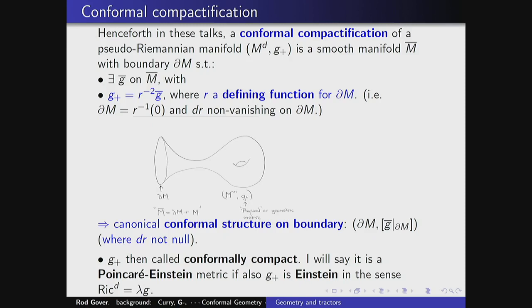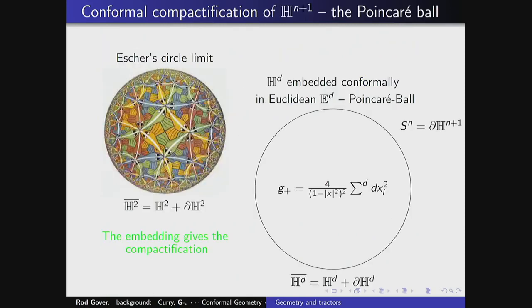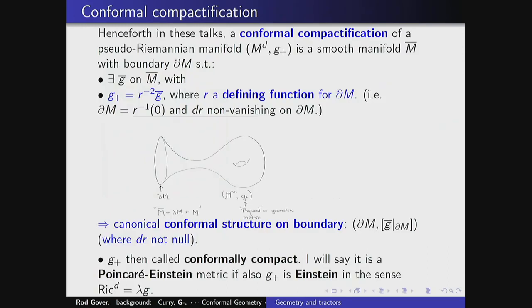G̅ is a metric that goes to the boundary, and the conformal factor is such that G₊ = ρ⁻² G̅, where ρ is a defining function for the boundary. That means the boundary is exactly the zero set of ρ, and the differential of ρ is nowhere vanishing on the boundary. We saw one in action — in the hyperbolic example, ρ would be (1 − x²)/2. If you're doing physics, G₊ is your space-time metric; in mathematics it's your geometric metric.